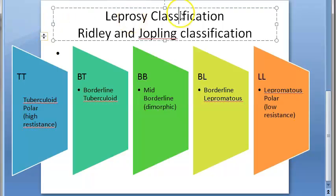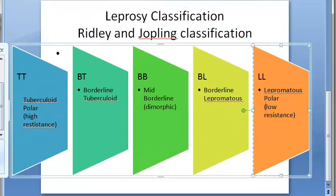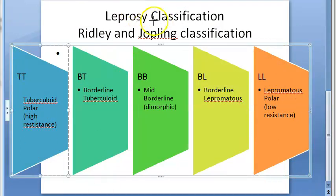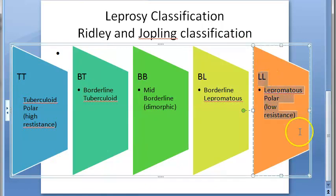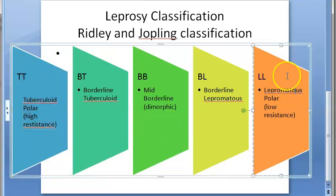In this video let us look at the classification for leprosy, or Hansen's disease. This is the Ridley and Joplin classification. You should remember two forms of leprosy: lepromatous leprosy, which represents low resistance, and tuberculoid leprosy, which represents high resistance. These are the two main types to understand.